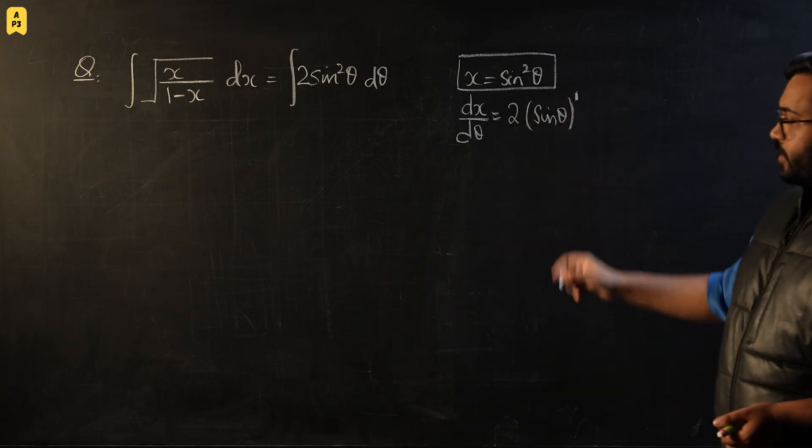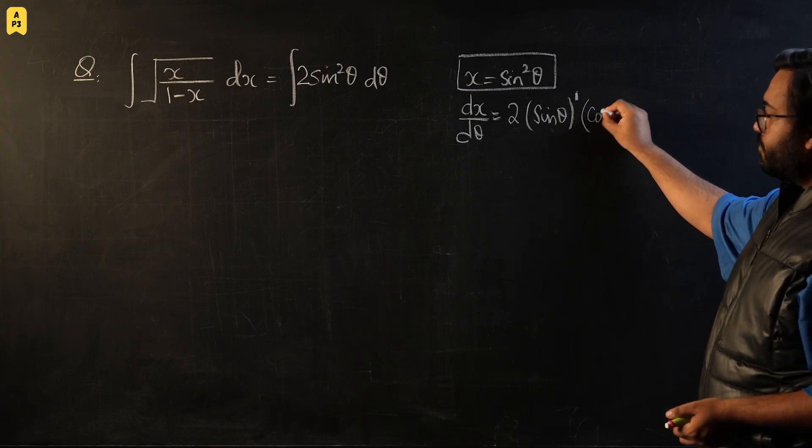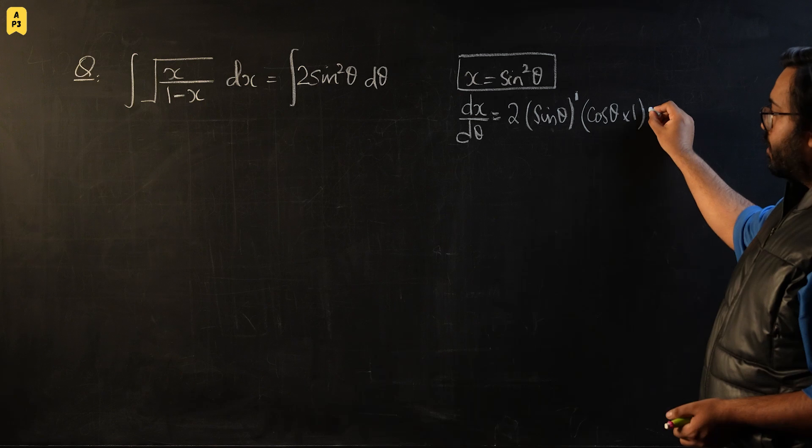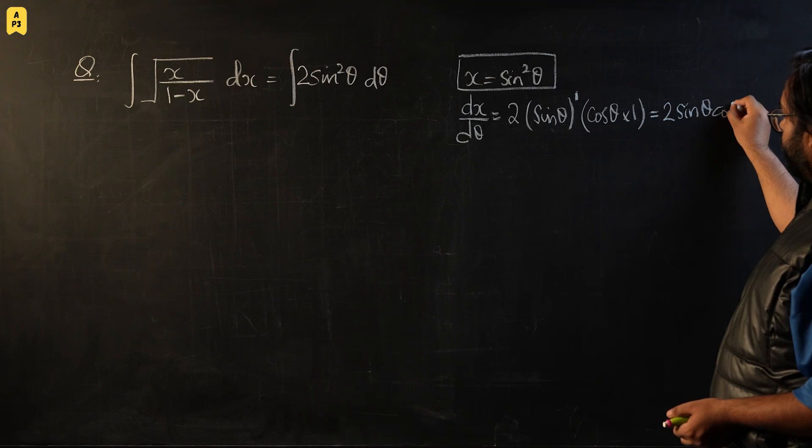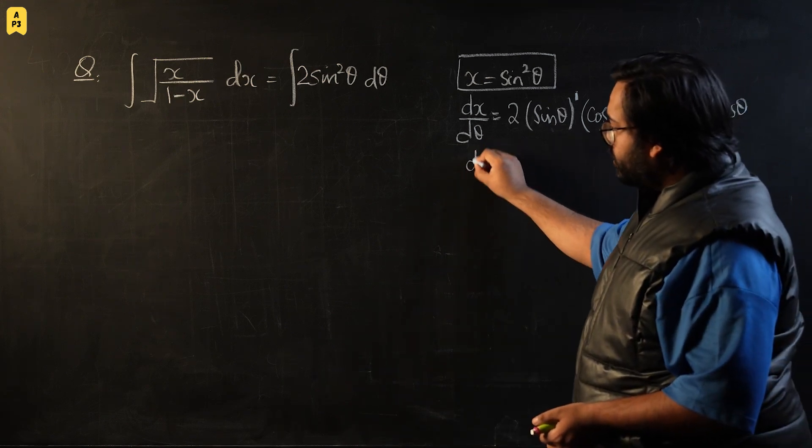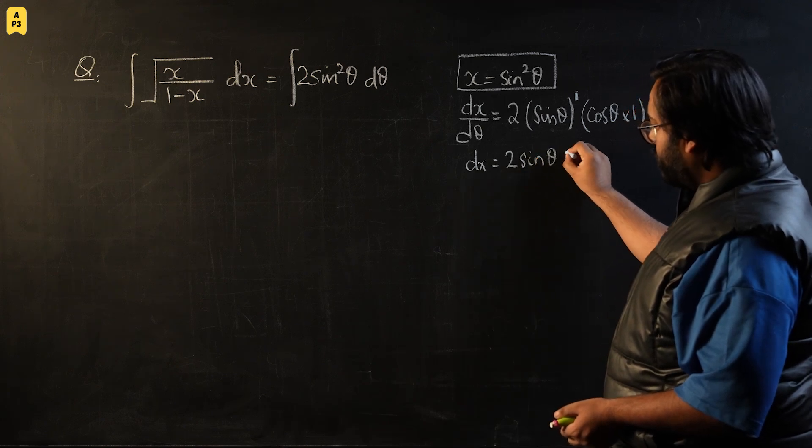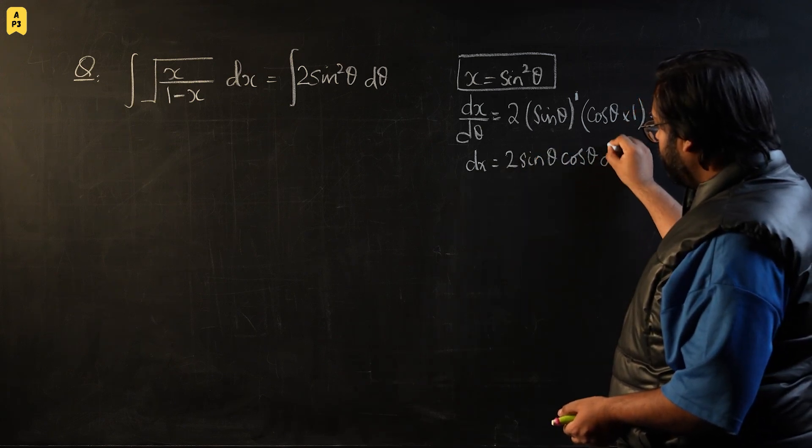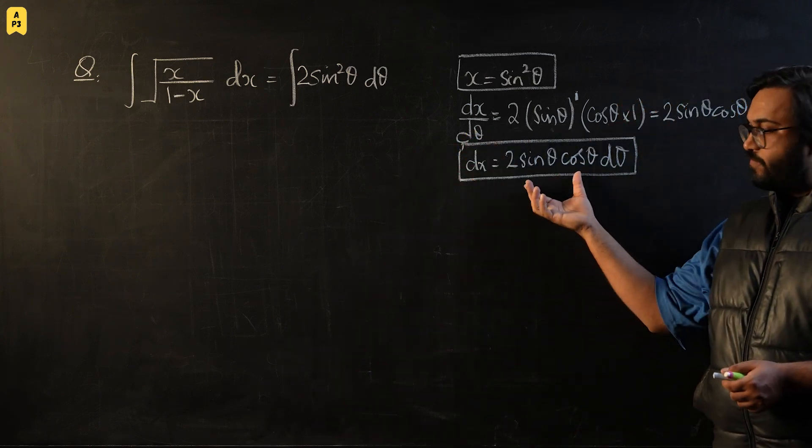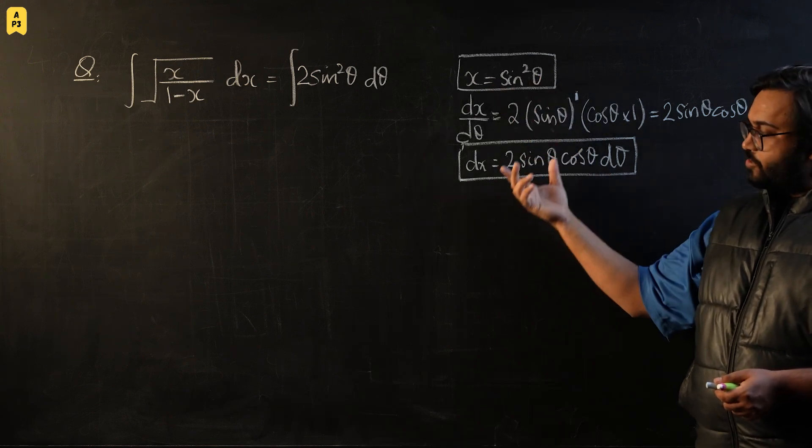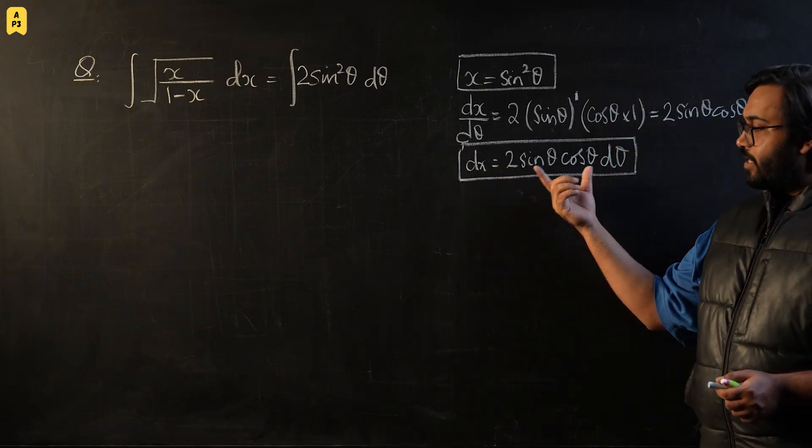Power would reduce by 1 and you multiply with the differentiation of the box, that is sinθ would become cosθ times 1. So this will become 2sinθcosθ. And if I make dx as the subject, it will be 2sinθcosθ dθ. So this is the first step of integration by substitution that we always do. What we do is we differentiate the substitution that is given and make dx the subject in this differentiation. We have done that successfully.